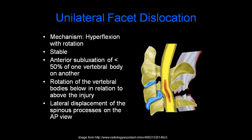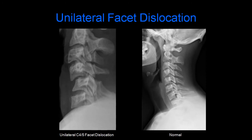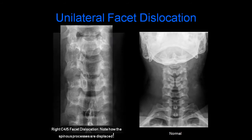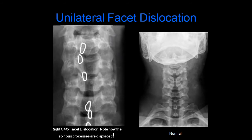Unilateral facet dislocation has a mechanism of hyperflexion with rotation and is considered a stable injury. There is anterior subluxation of less than 50% of one vertebral body on another. You can see rotation of the vertebral bodies below in relation to above the injury, and lateral displacement of the spinous processes on the AP view. In the example of unilateral C4-5 facet dislocation, the C4 vertebral body is anteriorly subluxed in relation to C5, but the bowtie sign is absent.